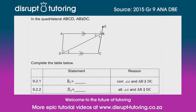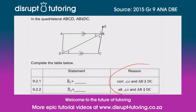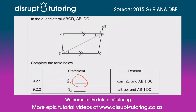They've said to us: complete the table below. So again, they're easing you into this question — they're already giving you the reasons. They've said that B1 is equal to some sort of angle.